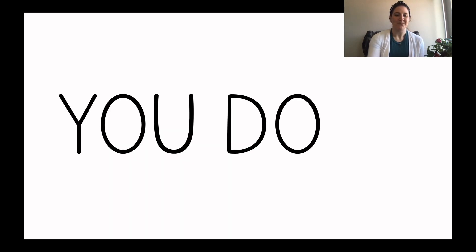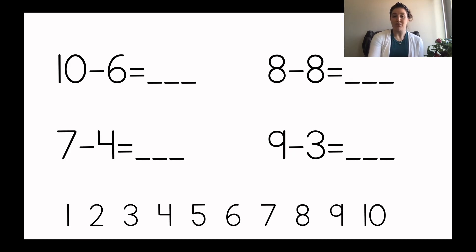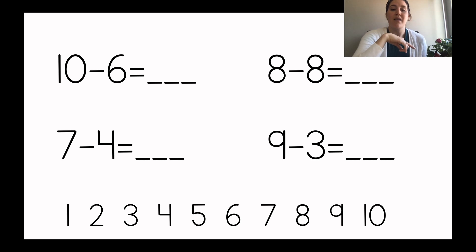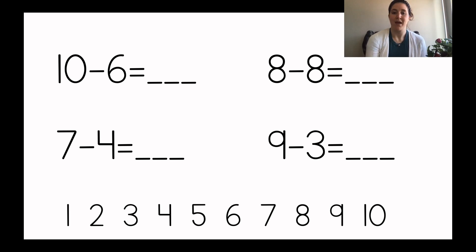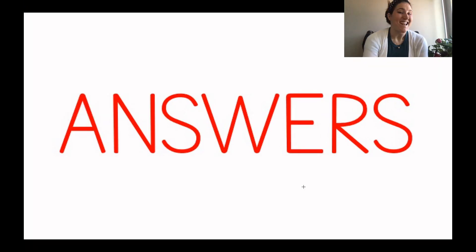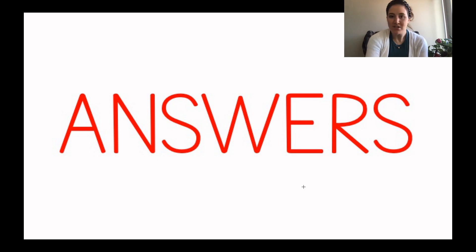Very good, kindergarteners! Now it's your turn to solve some problems by yourself. On your paper, write these problems: ten minus six equals blank, seven minus four equals blank — make sure you're giving yourself space between the problems — eight minus eight equals blank, and nine minus three equals blank. If you've finished solving those subtraction number sentences using drawing, look at the screen to see the answers. If you're not done, pause the video so that you don't get the answers before you're done solving them.